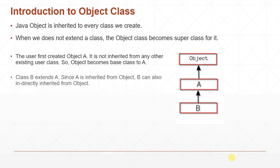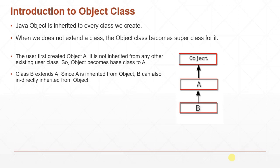Now let's say we are extending class B from class A. The user will see A as the base class for B. But if we look more closely, since A is already inherited from Object, all the methods of Object get inherited by B as well. So B is indirectly derived from Object, because B derives from A, and A is derived from Object.